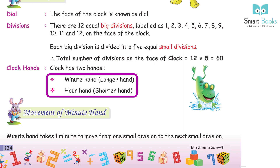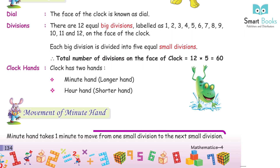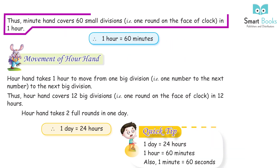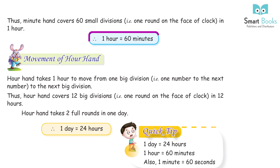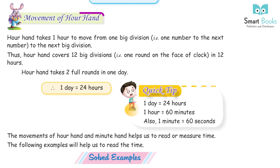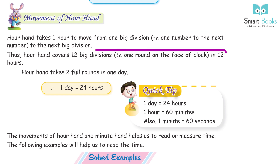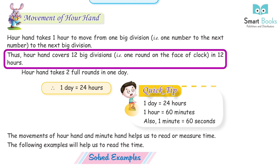The clock has two hands: the minute hand (longer hand) and the hour hand (shorter hand). The minute hand takes one minute to move from one small division to the next. Thus the minute hand covers 60 small divisions — one round on the face of the clock — in one hour. One hour equals 60 minutes. The hour hand takes one hour to move from one big division to the next. The hour hand covers 12 big divisions in one round in 12 hours.